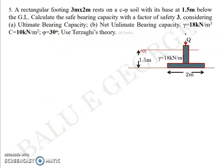Compiling the data given in the question: gamma is 18 kN/m³, length L is 3m (the longer dimension), breadth B (the shorter dimension) is 2m, depth of foundation Df is 1.5m, cohesion C is 10 kPa, and phi is 30 degrees.